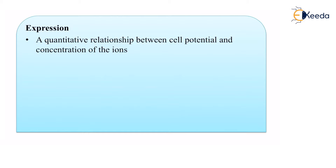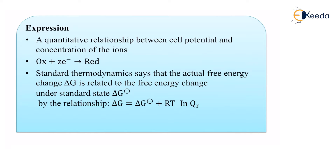This is a relationship between the cell potential as well as the concentration of the ions, which might be present inside the electrolyte within the electrochemical cell. Standard thermodynamics states that the actual free energy change, delta G — delta G being the Gibbs free energy, named after Gibbs who discovered this — is related to free energy change under standard delta G.